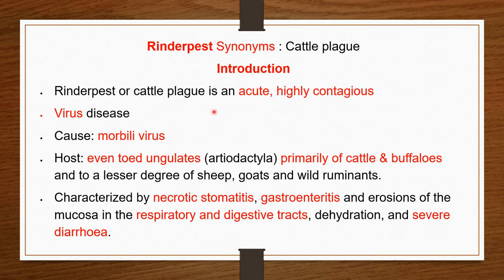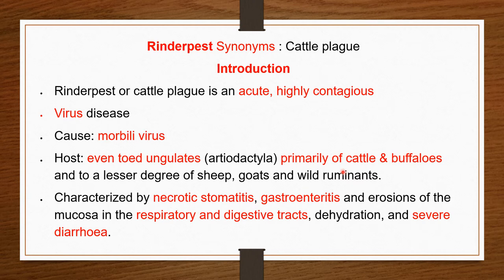Rinderpest, or cattle plague, is an acute, highly contagious viral disease caused by Morbillivirus. The commonly affected hosts are even-toed ungulates — animals whose toe is bifid, or two toes — generally of the order Artiodactyla. Rinderpest is primarily a disease of cattle and buffalo, and to a lesser extent affects sheep, goats, and wild ruminants.